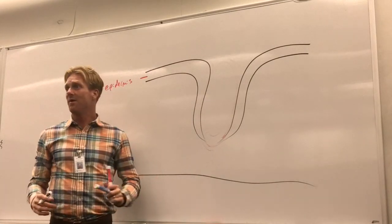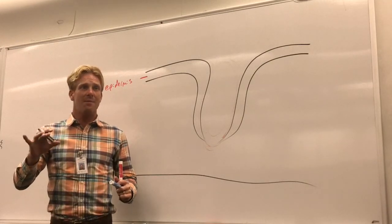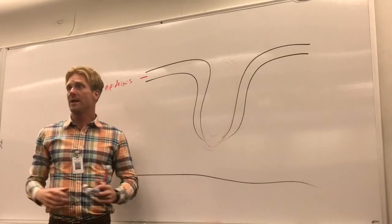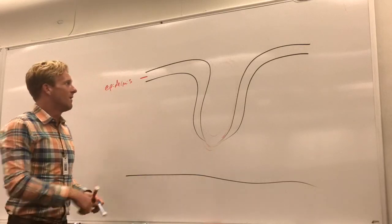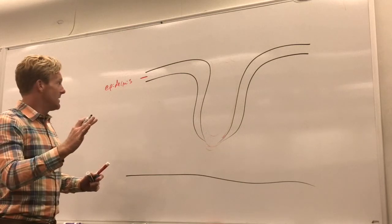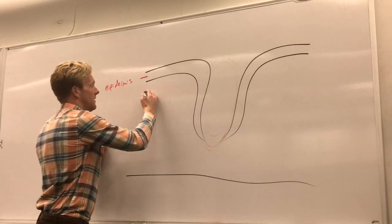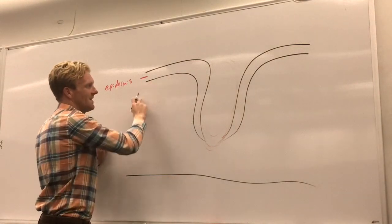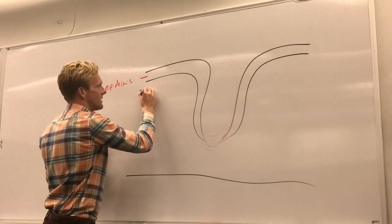Now if we remember, the dermis is composed of two different regions. We've got the more superficial papillary layer, which is composed of that loose areolar connective tissue. It's full of blood vessels. This is what really provides the nutrition for all of these cells in the epidermis. Now this papillary layer of the dermis is going to be located right about here, it's about this thick.